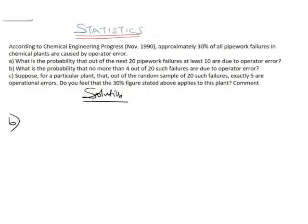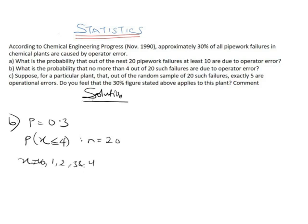For part B, we are asked: what is the probability that no more than 4 out of 20 such failures are due to operator error? No more than 4 means at most 4, so x ranges between 0, 1, 2, 3, and 4. The probability p remains 0.3 and n = 20, so we need P(X ≤ 4).